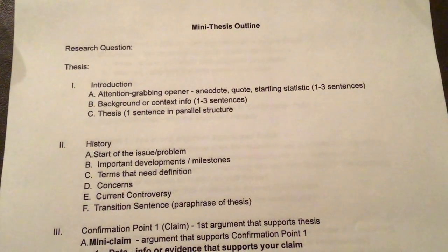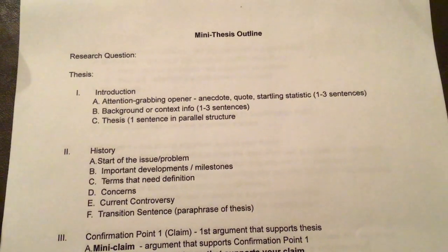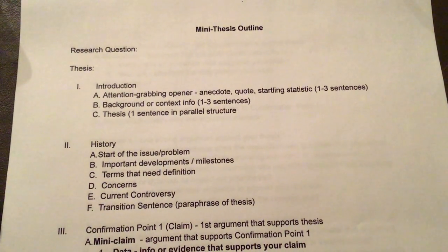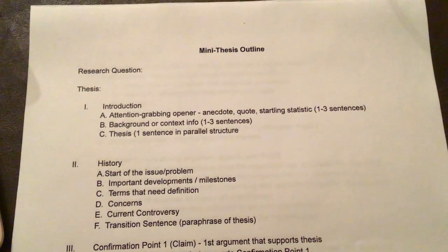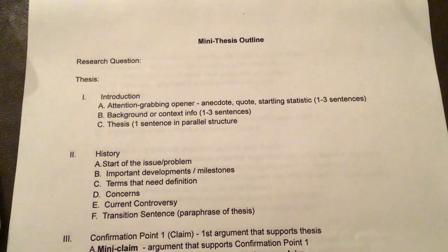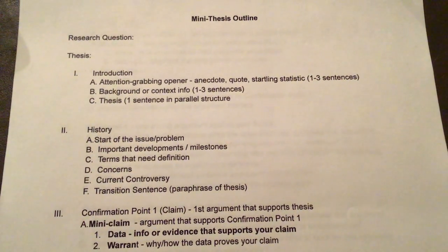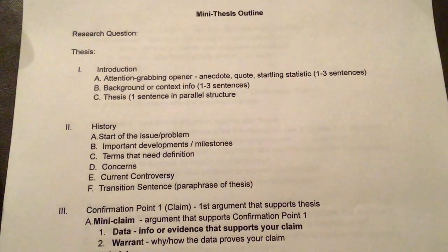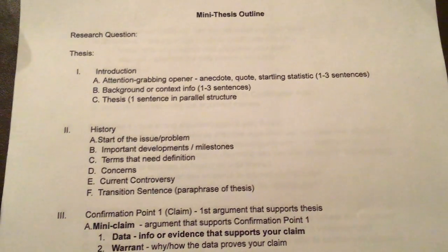One handout is your mini thesis outline. This one that I've got the camera on right now is a template, and you have this as a doc on Google Classroom. You're going to make your own copy of this, and this is going to be your working document that you're going to begin outlining your topic. It's single spaced, and for this assignment that is fine. Do not be surprised if your outline ends up being four or five pages. This is going to be a pretty detailed outline that's going to help you write your paper much more easily than if you didn't have it.